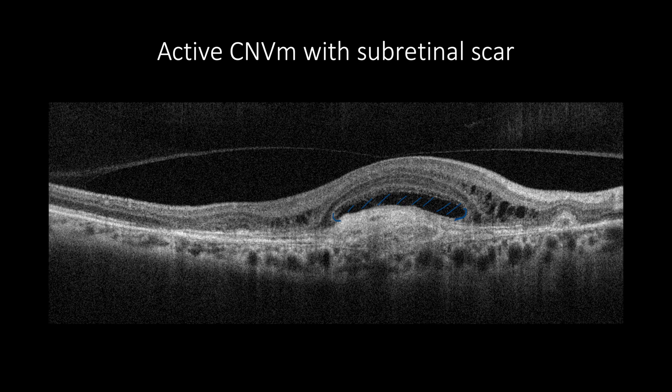These cases can be with or without intraretinal cystic formation combined with increased retinal thickening, along with a consolidated subretinal scar with ellipsoid zone and external limiting membrane disruption, with or without outer retinal tubulation. Some cases can be combined with fibrovascular PED or subretinal hyperreflective amorphous material.